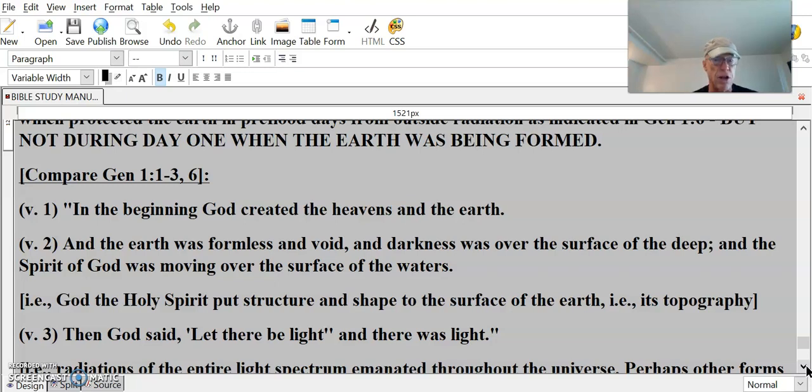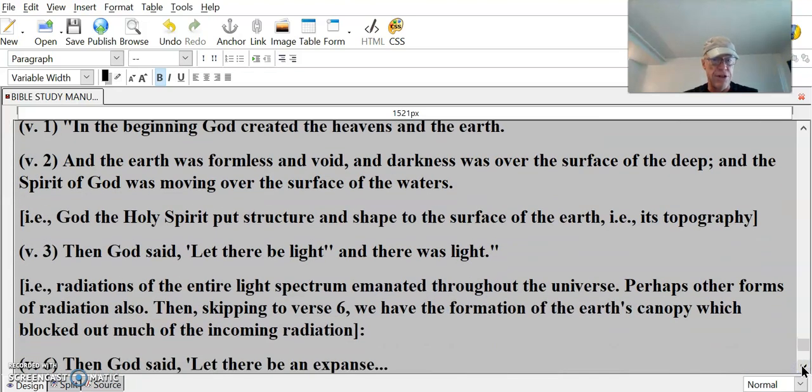I.e., God, the Holy Spirit, put structure and shape to the surface of the Earth, i.e., its topography. He's the artist, supernatural God. Then, God said, let there be light, and there was light, i.e., radiations of the entire light spectrum emanated throughout the universe. Perhaps other forms of radiation also. Then, skipping to verse 6, we have the formation of the Earth's canopy, which blocked out much of the incoming radiation.